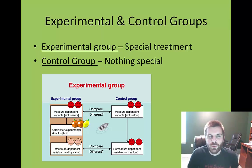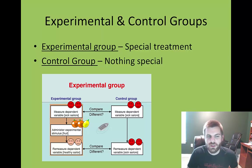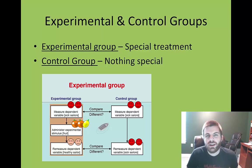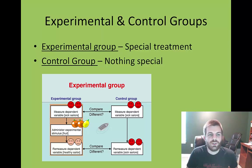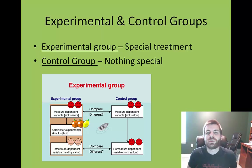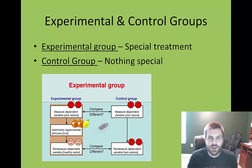Within the experimental method you have two types of groups. The experimental group is the group that receives some special treatment, and the control group receives nothing special — nothing changes for them. For example, in an experiment testing whether a particular type of candy or food impacts your test score, the people who get the food are the experimental group. The ones who get no special treatment are part of the control group.